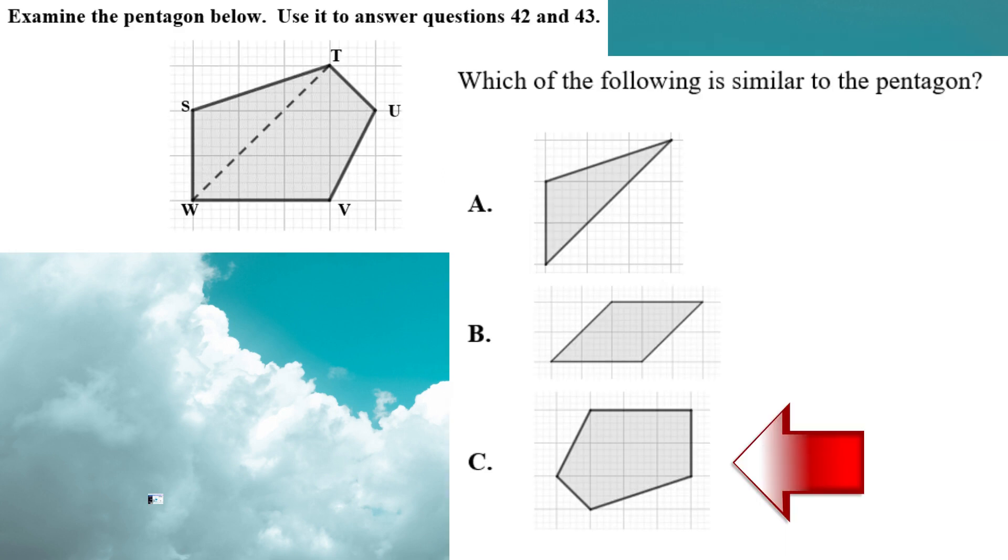Examine the pentagon below. Use it to answer questions 42 and 43. Which of the following is similar to the pentagon? Now, when the question says similar, it means alike. So this pentagon here at the top, it has one, two, three, four, five points or five corners or axes, depending on the term that the child knows. So they are named S, T, U, V, and W. So when you look at that, then you will look and see that C does not have five points or axes. It only has three. Option B only has four. So the one that it's most similar to would be C. That would be the answer. This pentagon at C is the one that is most similar to the one in the question.